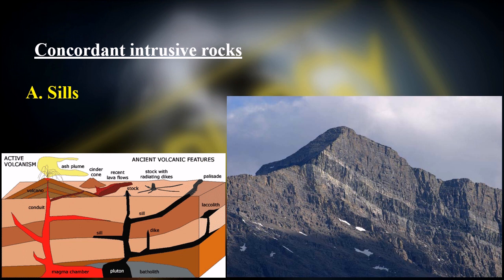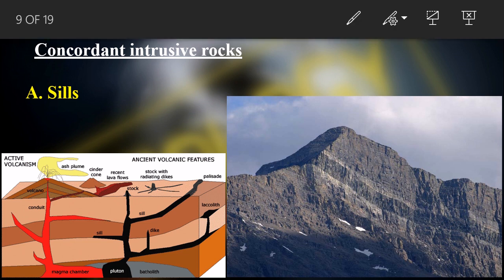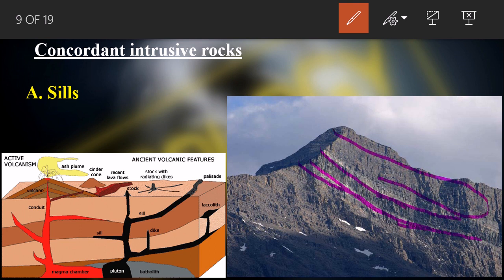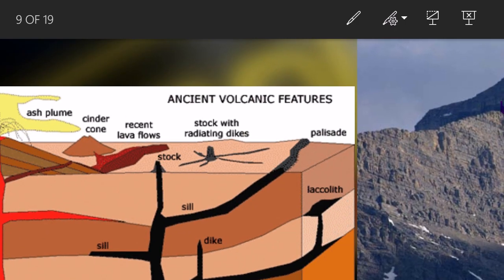Next we have sills, which are concordant intrusive rocks. Concordant means parallel to the pre-existing structure. When hot magma comes out from an opening and solidifies parallel to the pre-existing geometry of the country rock — as you can see in the figure where the dark-colored sill layer is concordant with the overall structure around it — it is called a concordant intrusive body. This sheet-like structure is called a sill.